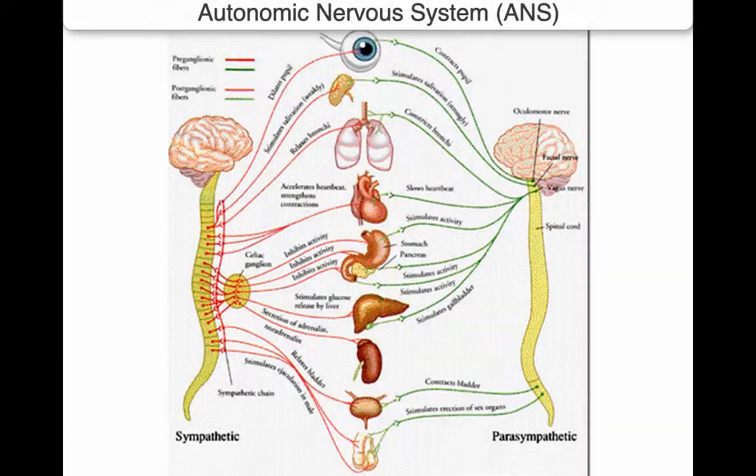Nervous responses that do not require conscious thought belong to the autonomic nervous system, ANS. The ANS can show such things as heartbeat, diaphragm movement, peristalsis of the gut, and release of hormones from endocrine glands.